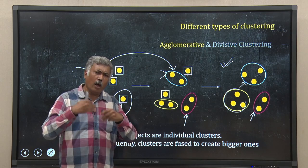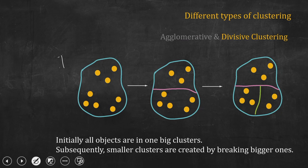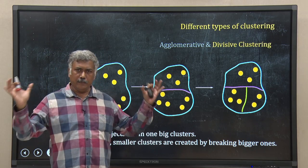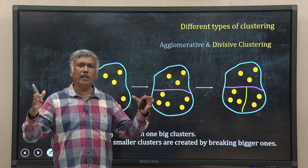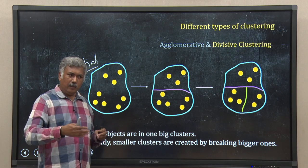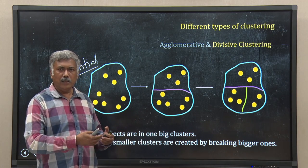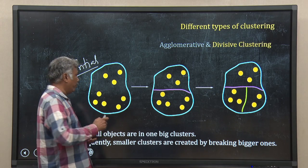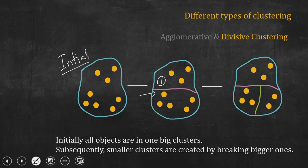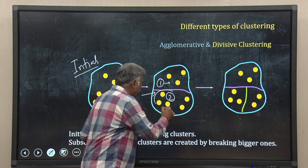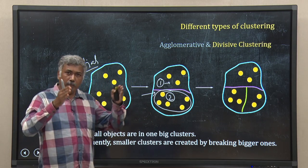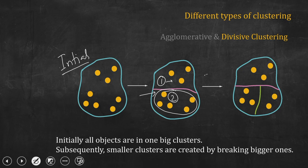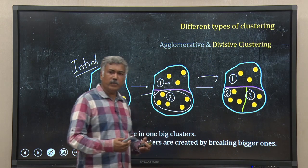In divisive clustering, we do just the opposite. Initially you consider that everything belongs to one big cluster — all your genes are part of that one single big cluster. Then, using some rule based on closeness of data points, you try to break this bigger cluster into smaller ones. We have broken them into two parts, reasoning that objects in one part are closer to each other than to those in the other. Then we continue until the whole set is divided into three subsets — that is why it is called divisive clustering.